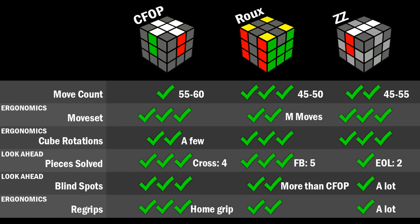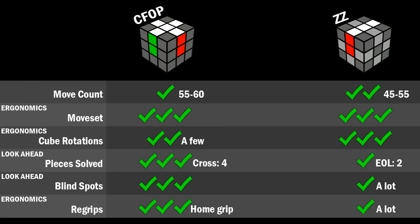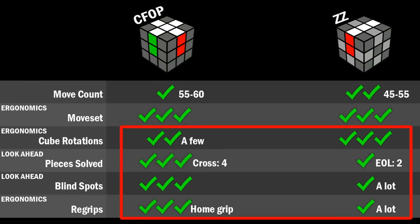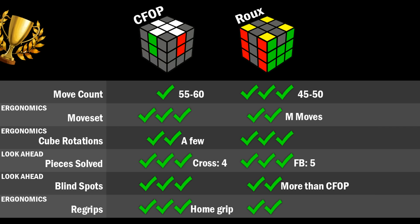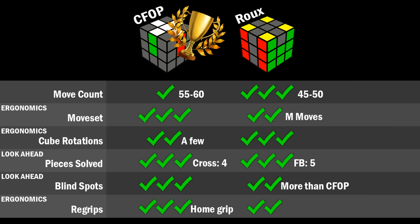I've pretty much covered all of the important facts and what conclusions you draw is totally up to you, but I'll tell you what I conclude. I think that with how similar CFOP and ZZ are as methods, a lot of the more important things at high level — ergonomics and lookahead — ZZ absolutely loses. I draw the conclusion that CFOP is much better than ZZ. But looking at the facts I cannot conclude that RU or CFOP is better than the other one. With how different these two methods are you'd have to use empirical evidence from what good solvers are capable of doing — things like better finger tricks and better algorithms. In the future I wouldn't be surprised if RU ended up being the best method or if CFOP ended up being the best method.